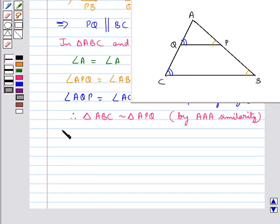And thus we have that AB upon AP is equal to BC upon PQ is equal to AC upon AQ.